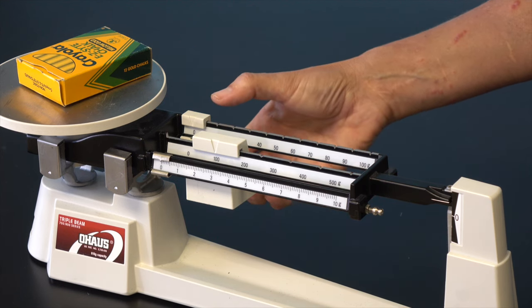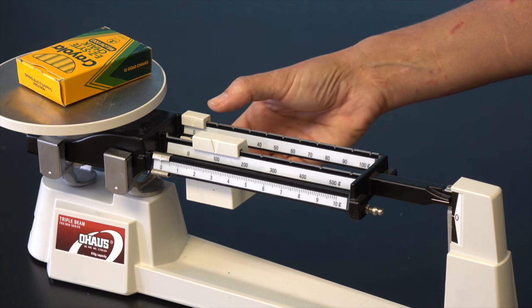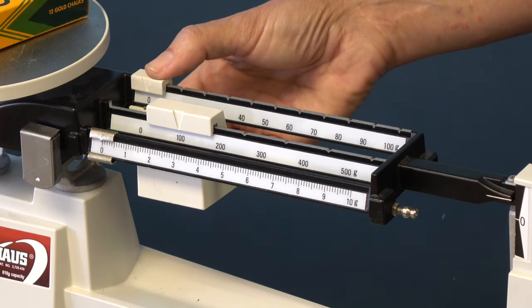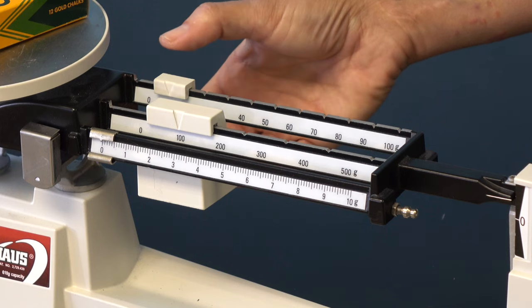Second, the 10-gram rider is moved in exactly the same way. It is advanced until the pointer drops below the zero mark, and then it is backed up one notch.